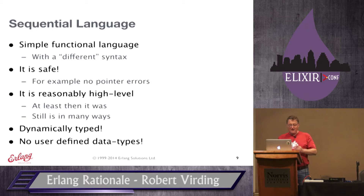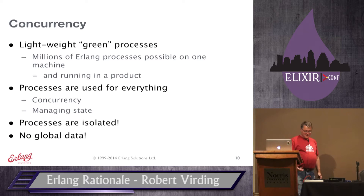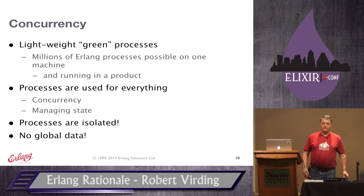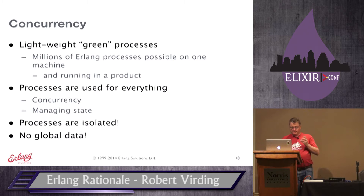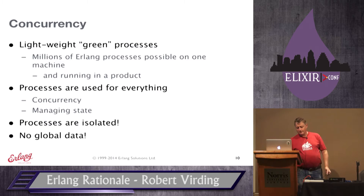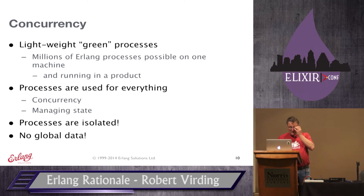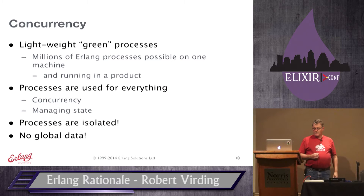We could have done a type system — no problem. I like dynamically typed languages. On concurrency: millions of processes are possible. To do that you can't use OS processes — most operating systems won't allow it; too much memory. WhatsApp is the best example I know: they came out two years ago saying they were running two million concurrent TCP connections on one machine using Erlang — at least two million Erlang processes. We use processes for everything — there is no global state.